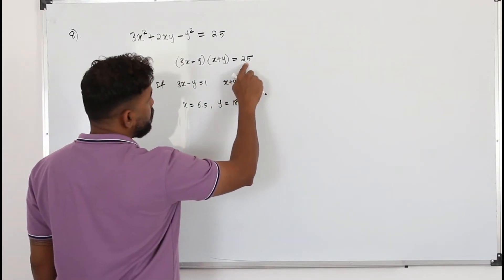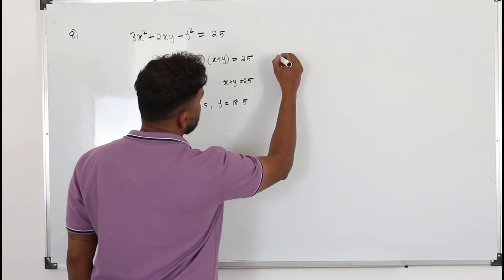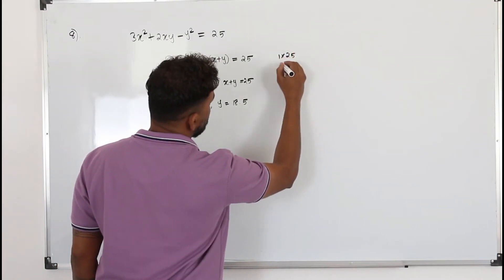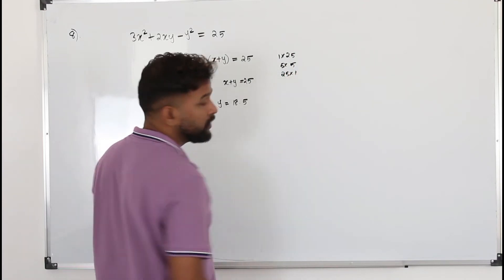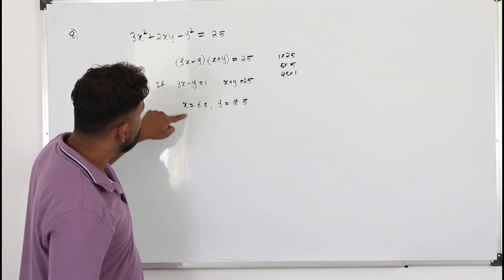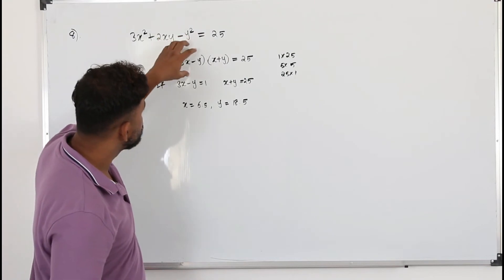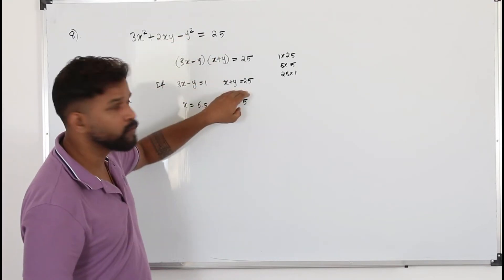Now 25, if you look at the factors of 25, it's 1 times 25 or 5 times 5 or 25 times 1. There are three cases. She has completed only one case where he has taken this as 1, this as 25.